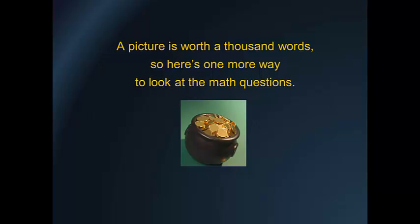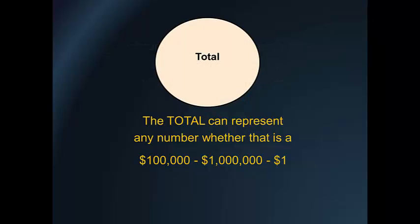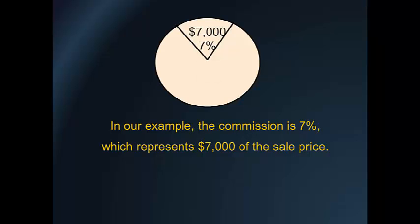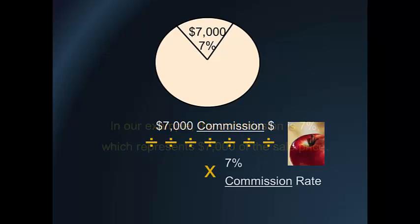A picture is worth a thousand words, so here's one more way to look at the math questions. The total can represent any number — whether $100,000, $1 million, or a $1 sale price. As a percentage, the total is always 100%. In our example, the commission is 7%, which represents $7,000 of the sale price. Remember, we always compare apples to apples. If the rate in the lower right is the commission rate, then the number or part is the commission dollars.